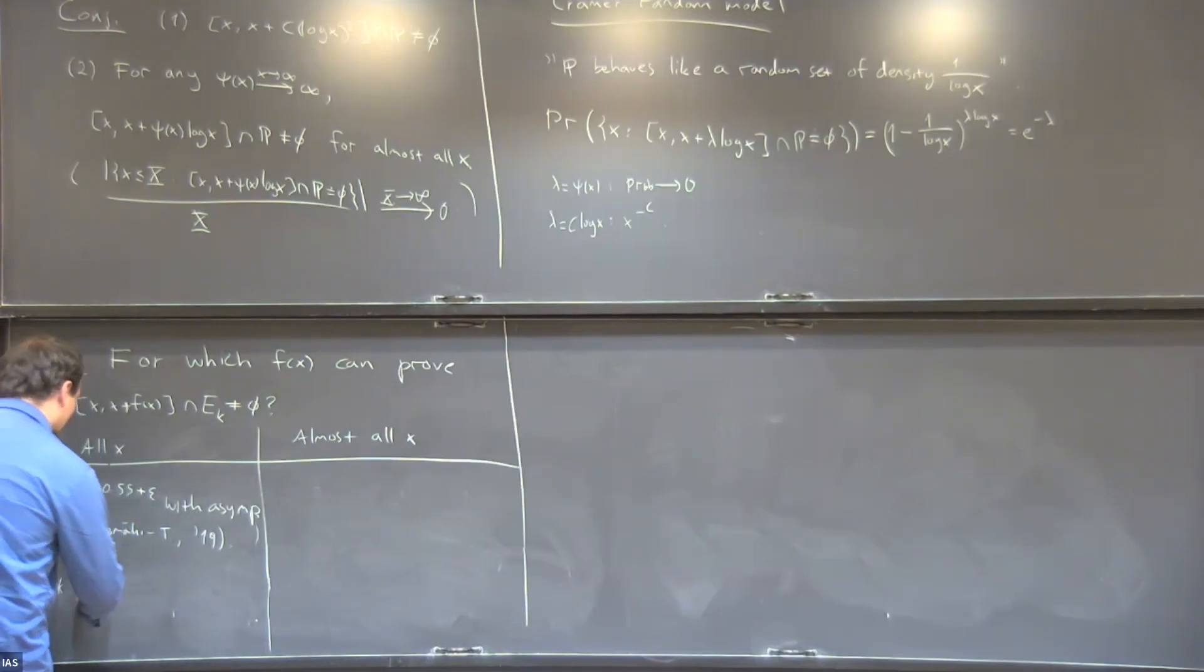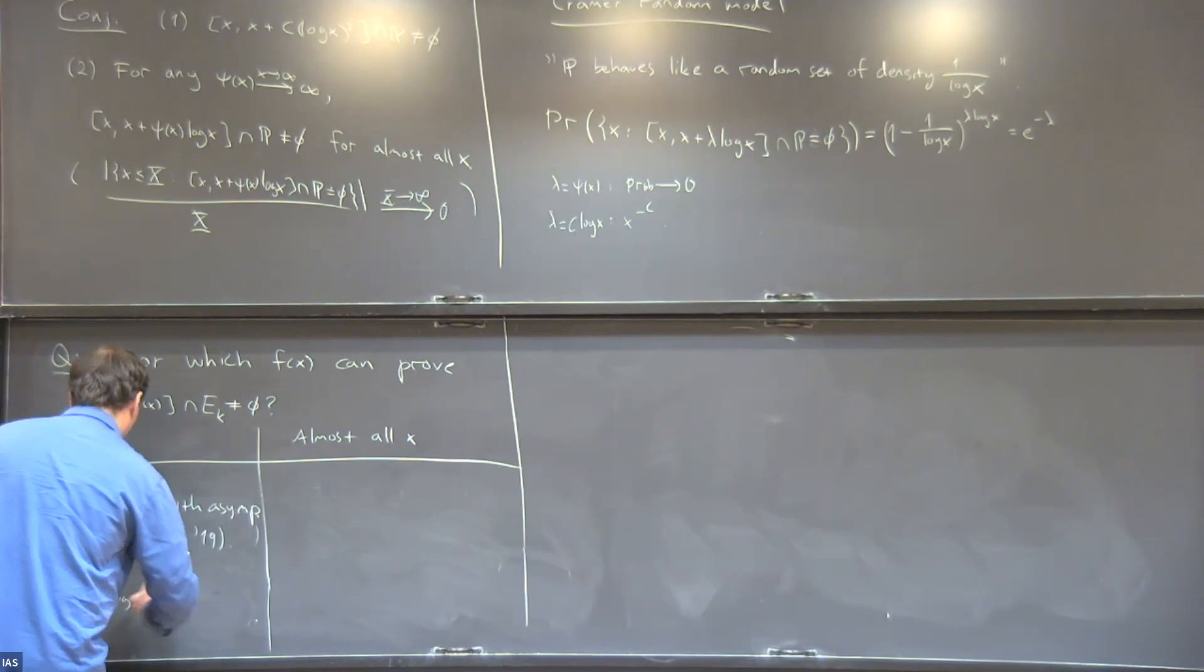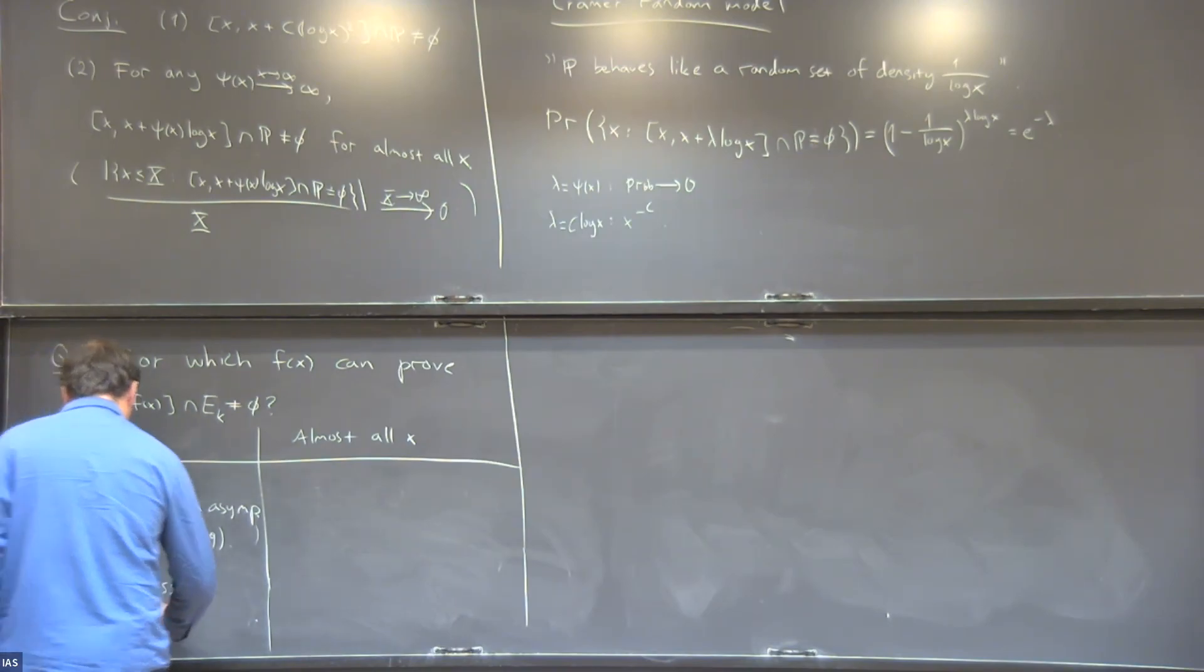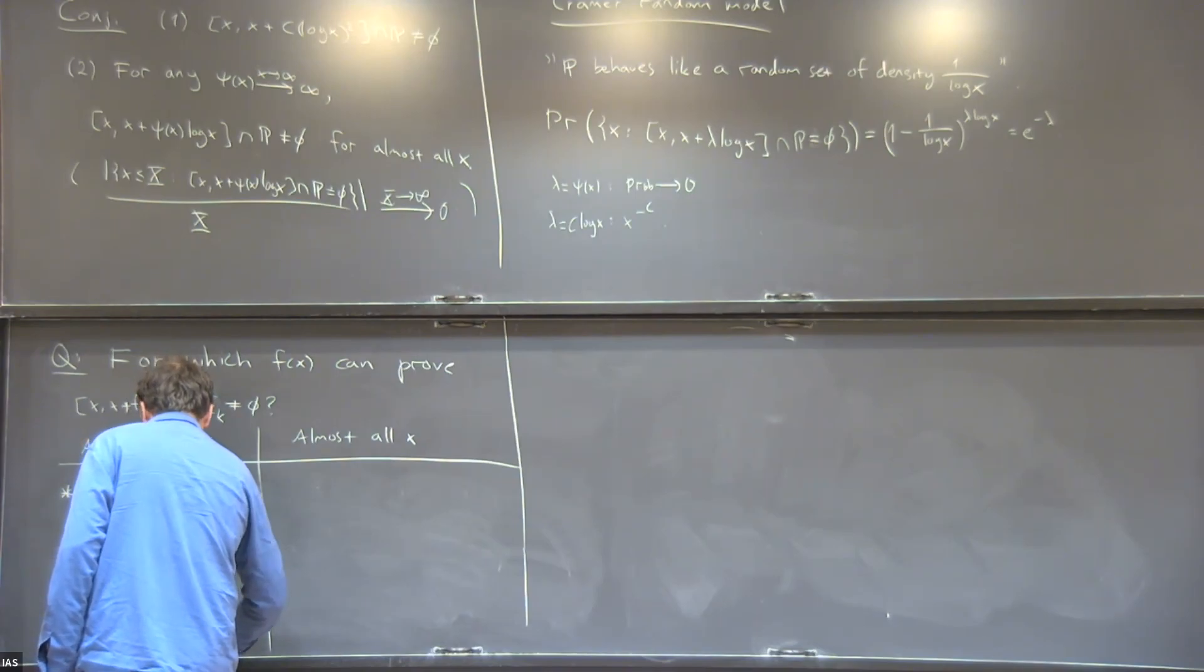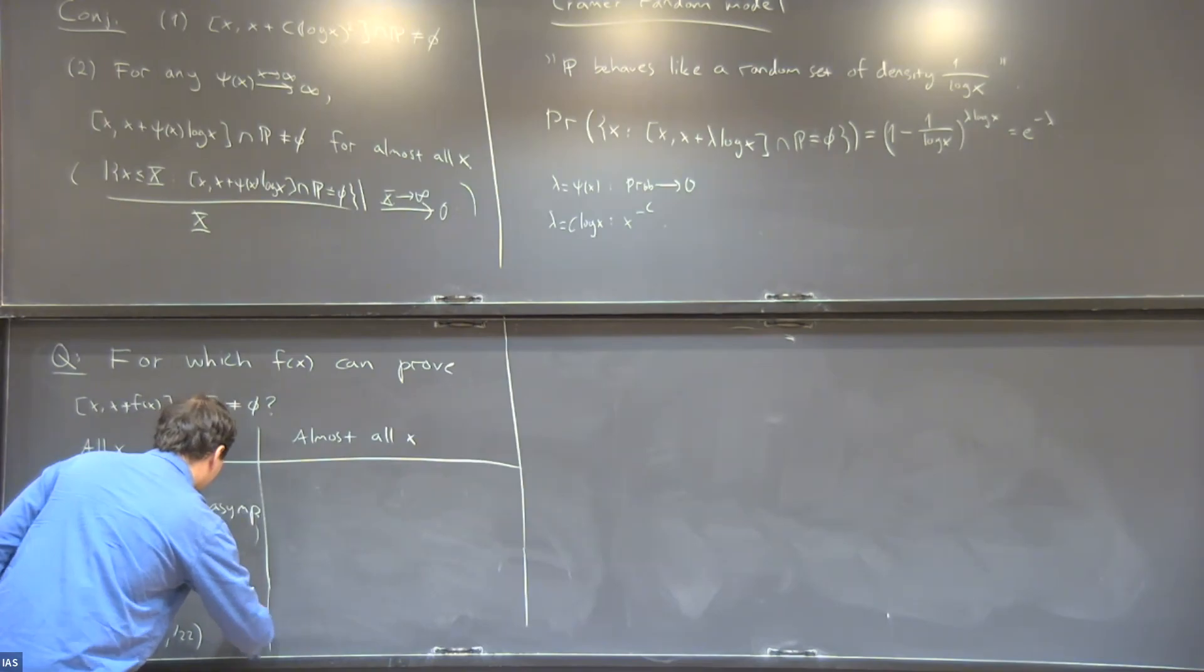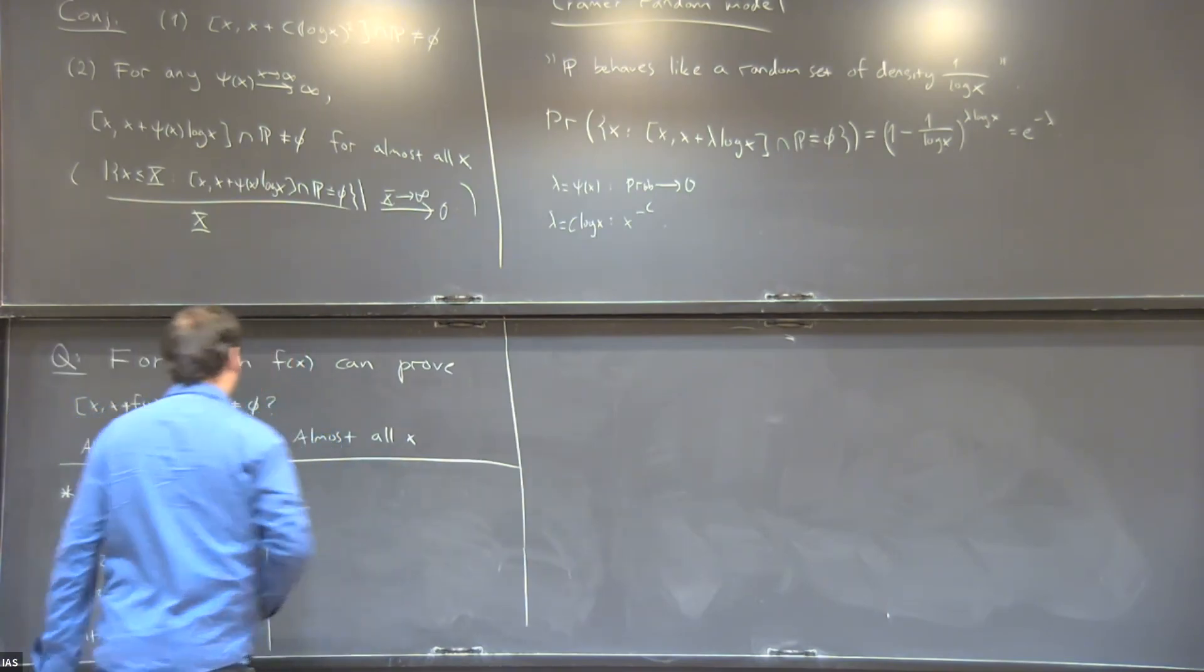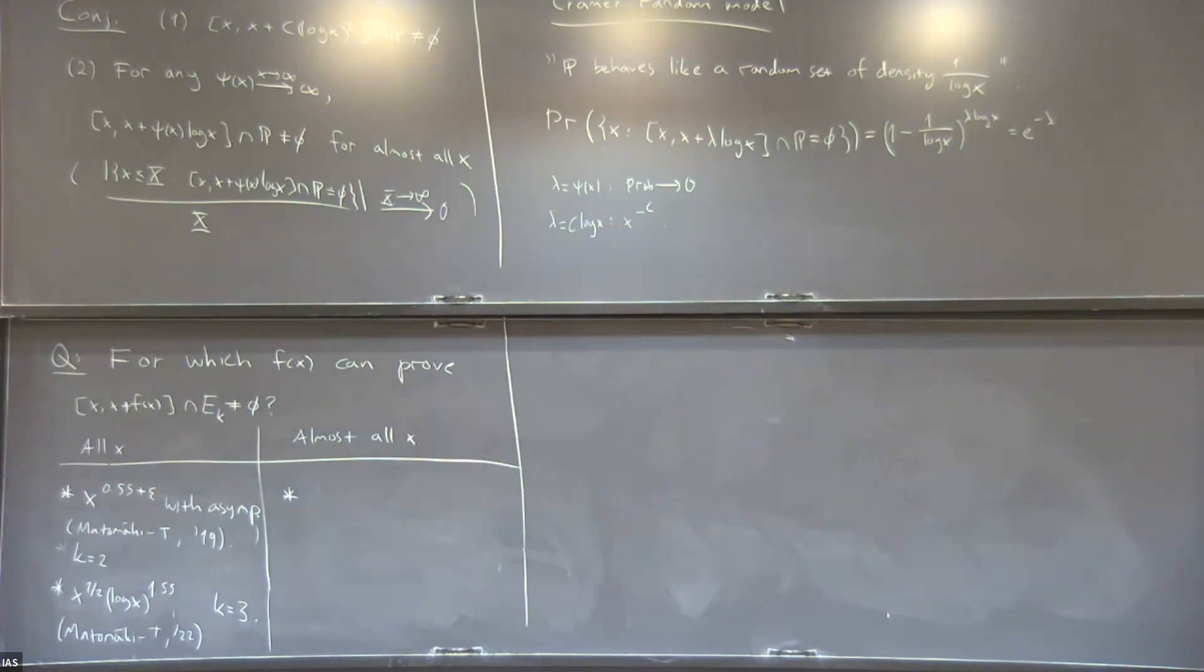For E_3 numbers, so products of three primes, we can do X to the one half log X to the 1.55. This is a theorem of Pomerance and myself from this year. So we get quite close to the X to the one half log X, and this is for k equals 3. That is the best known result for the primes under the Riemann hypothesis.